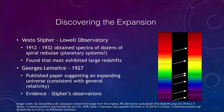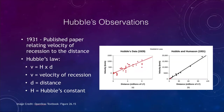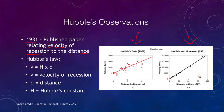Edwin Hubble in 1931 published a paper relating velocity of recession — how fast a galaxy was receding — to the distance of the galaxy. His original data from 1929 is shown here, covering only very nearby galaxies going out to a few million light years. In 1931 he had added more data going out much further, and was able to see a very distinct relationship between velocity on the y-axis and distance on the x-axis.